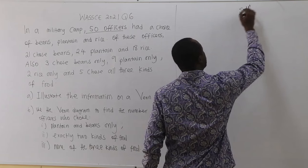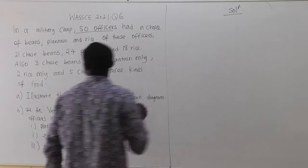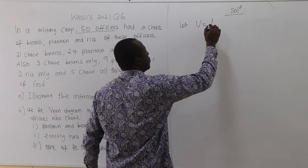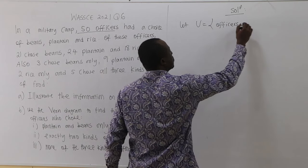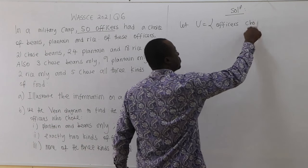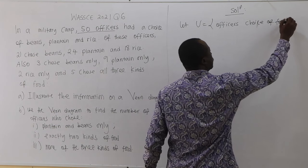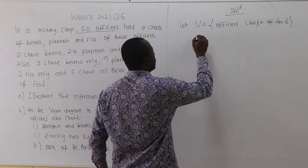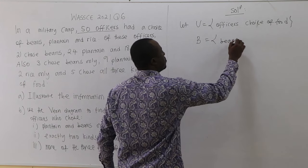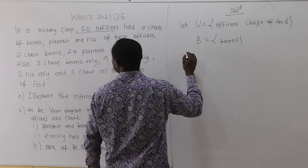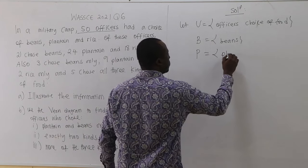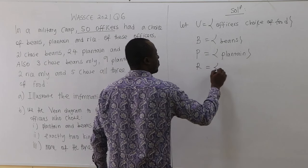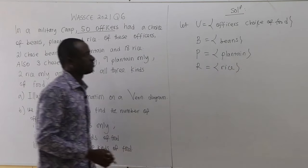We have in a military camp 50 officers. So we can say that let U be the set of officers' choice of food. So we have beans, plantain and then rice. Probably B for beans, that is officers that like beans. And then P for plantain, and then R for rice.